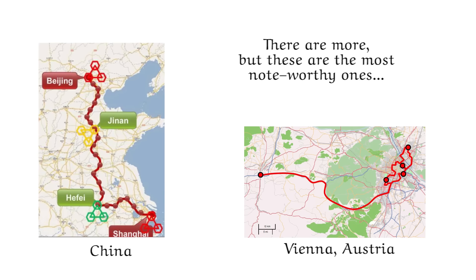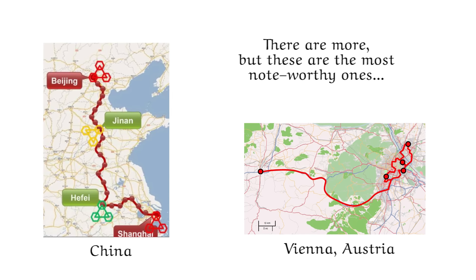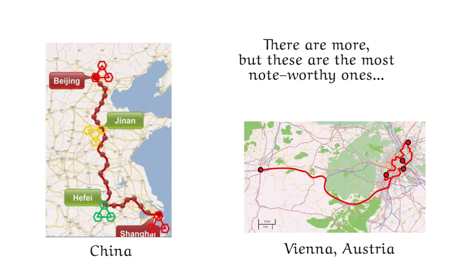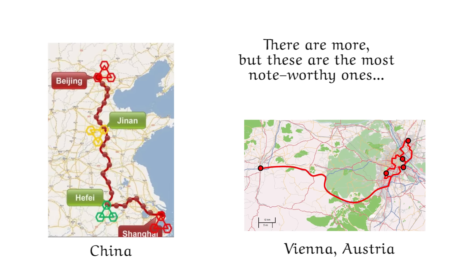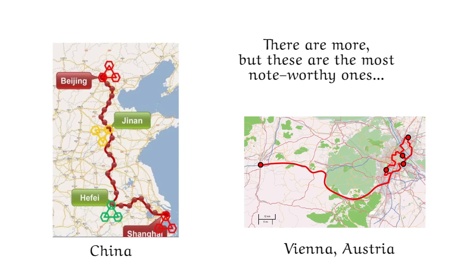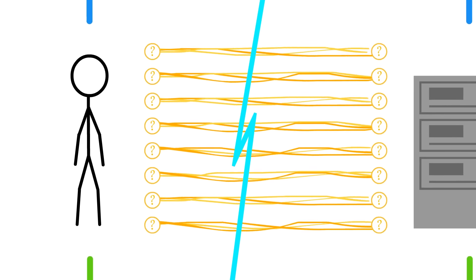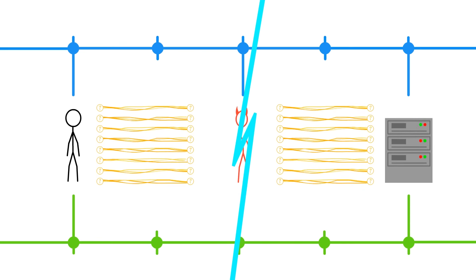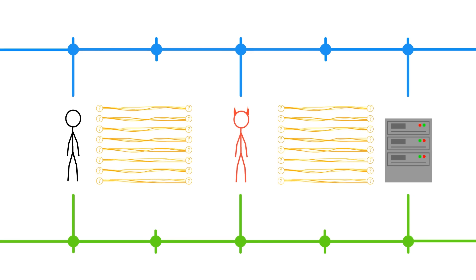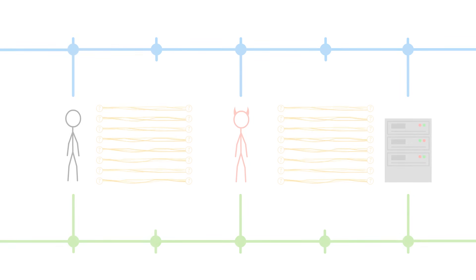But small quantum networks are being built, and they have even successfully performed the BB84 protocol. In addition, these protocols don't fix all the problems the classical ones have. For instance, man-in-the-middle attacks are still possible, where the eavesdropper impersonates both you and the server, so neither of you notice anything wrong.